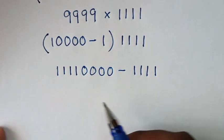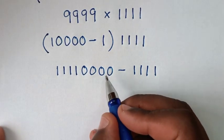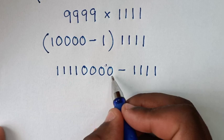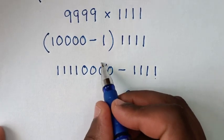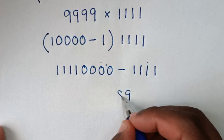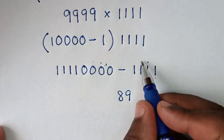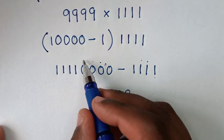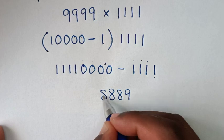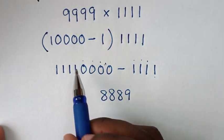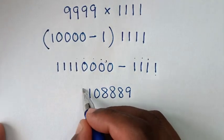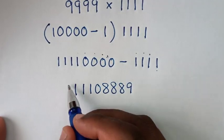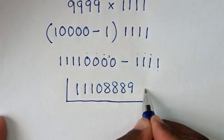Then in the next step, we'll subtract. We'll borrow 1, so 10 minus 1 is 9, then 9 minus 1 is 8, 9 minus 1 is 8, 9 minus 1 is 8. We borrowed 1, so it will be 0, then 1, 1, 1. Therefore, this is our final answer: 11103889.